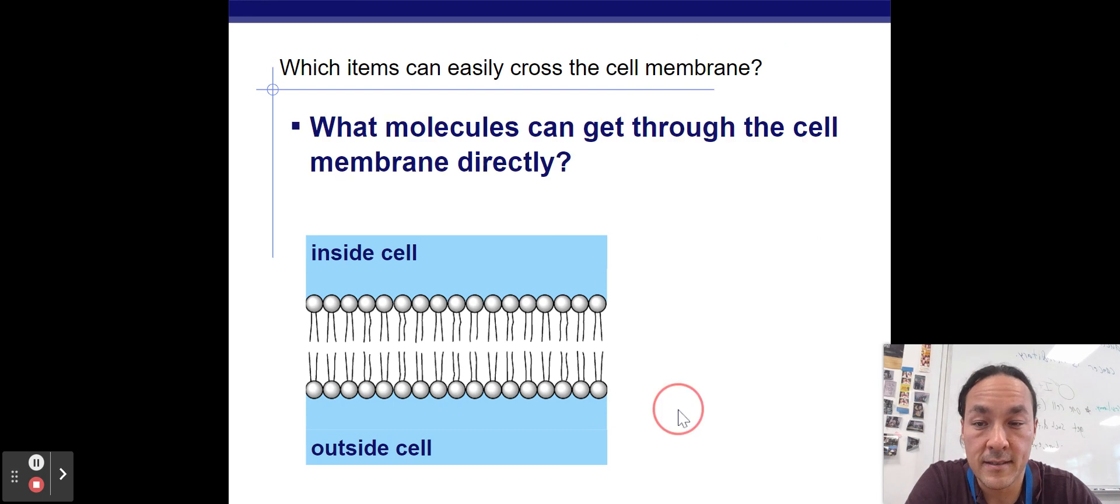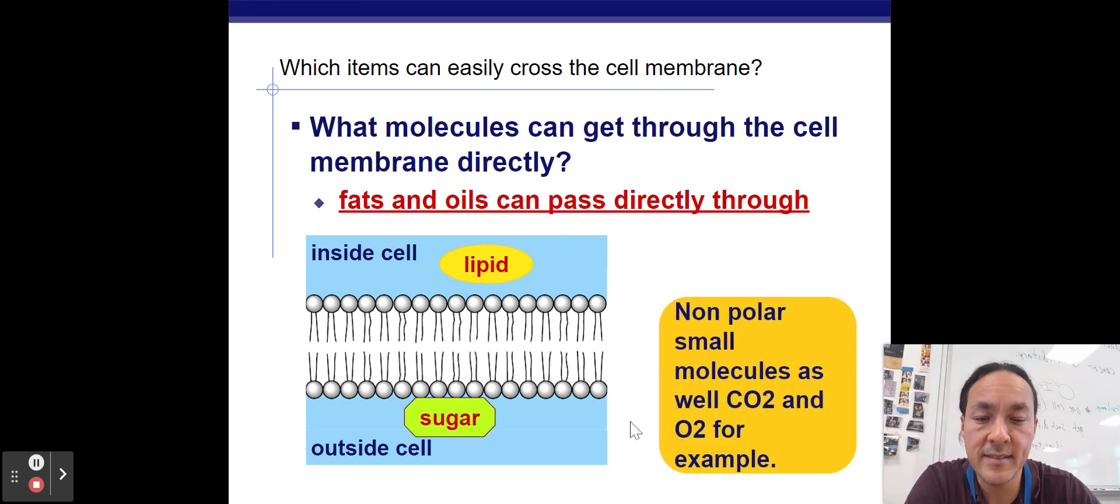Which items can easily cross the cell membrane? Things that are nonpolar and that are small cross the membrane very easily. Nonpolar means that it has an equal distribution of electrons in it. I would need to tell you in introductory biology whether or not a molecule is polar or nonpolar. You're not at the point yet where you can figure it out on your own probably. Maybe you are. And if so, that's awesome.